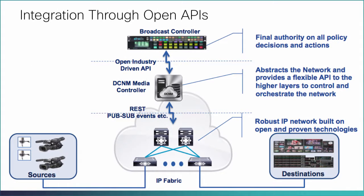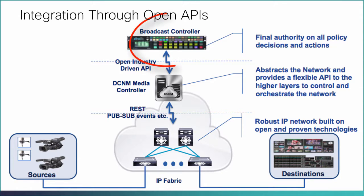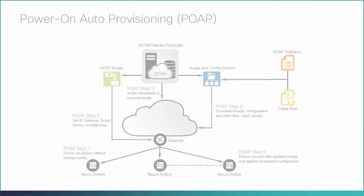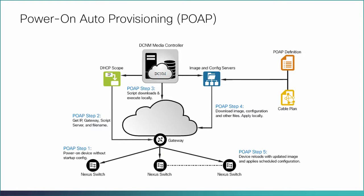Through open APIs, the DCNM media controller seamlessly integrates with the broadcast controller, ensuring that the end operator experience remains the same. Using power-on auto-provisioning, the switches in the fabric are configured upon boot-up without requiring a user to execute CLI configuration commands. POAP provides a quick and easy way to configure the fabric and is less prone to errors that might be introduced by manually provisioning the switches.